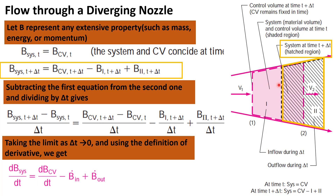At time t plus delta t, the fluid moves in the forward direction. By the definition of a system, we follow the fluid. These hatched regions show the system at time t plus delta t. No mass can cross the boundaries of a system — we follow the fluid as it moves. The control volume, however, remains fixed.